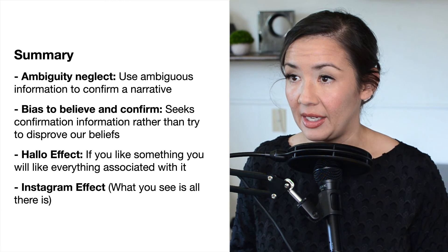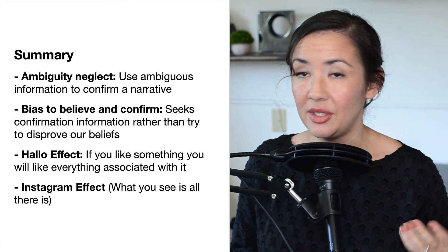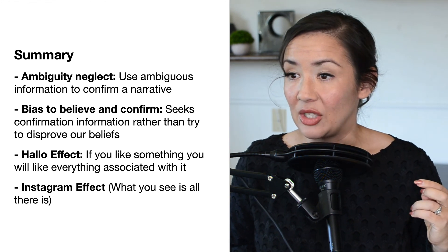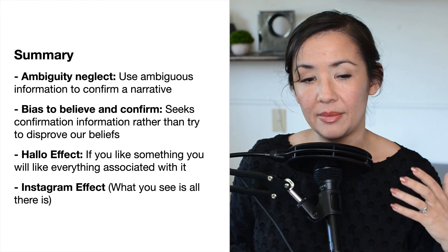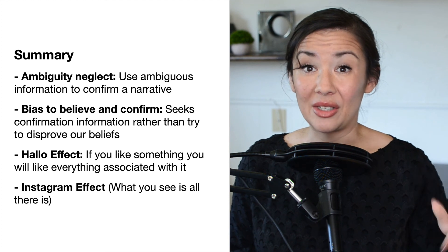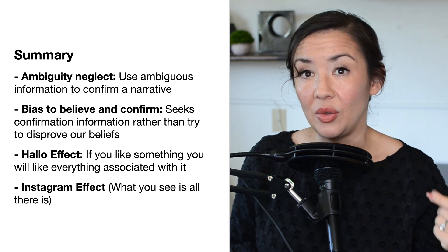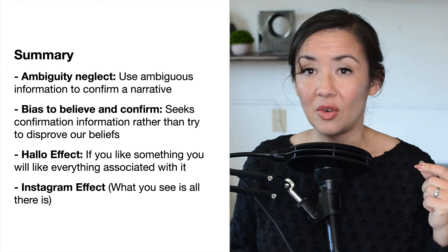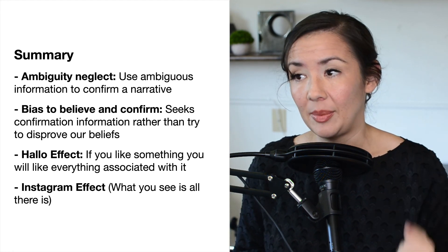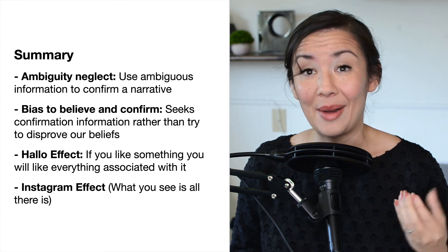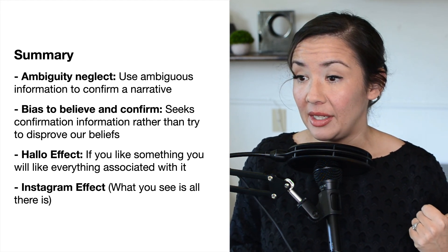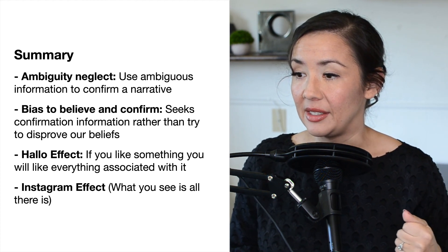Summary for what we've learned today: Ambiguity neglect is using ambiguous information to confirm a narrative. Bias to believe and confirm is when we seek confirmation of information rather than try to disprove our beliefs — this is especially important today because algorithms serve us information consistent with our beliefs, making it hard to think of counter evidence. The halo effect is: if you like something, you will like everything associated with it. And the Instagram effect is: what you see is all there is.